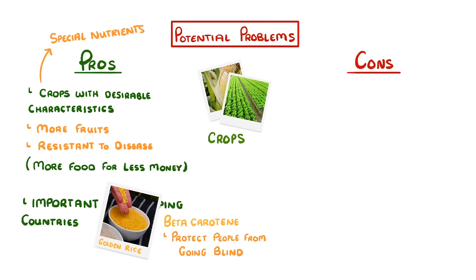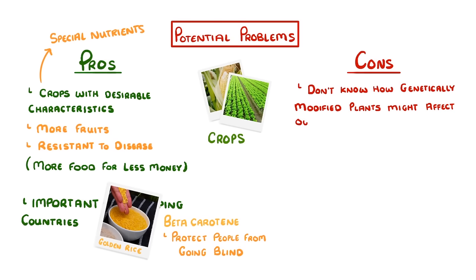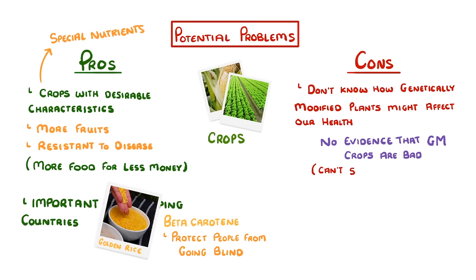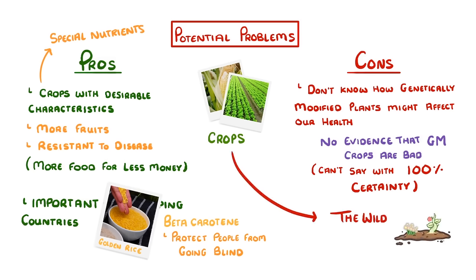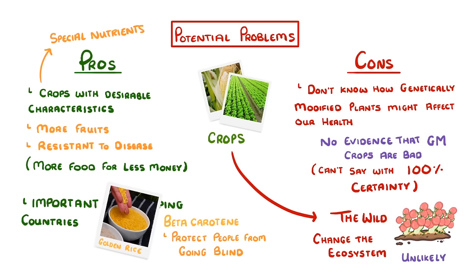One of the main issues, though, is that we don't know for certain how genetically modified plants might affect our health. There's currently no evidence that GM crops are bad for us, but we just can't say with 100% certainty yet. There's also the chance that plants could make their way into the wild, where they might out-compete local plants and change the whole ecosystem. This concern is pretty unlikely, though, as the plants have been specifically modified to survive in a farmer's field, not to survive in the wild.